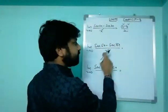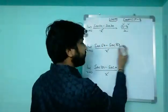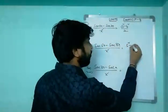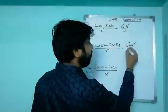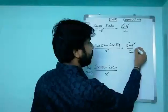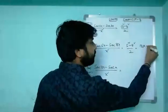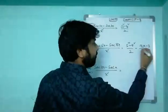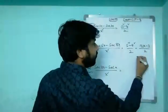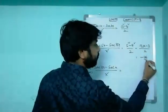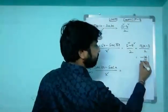For example: limit x tends to zero of [sec(5x) minus sec(8x)] divided by x square equals (5² minus 8²)/2 = (25 minus 64)/2 = minus 39/2. That's your answer.